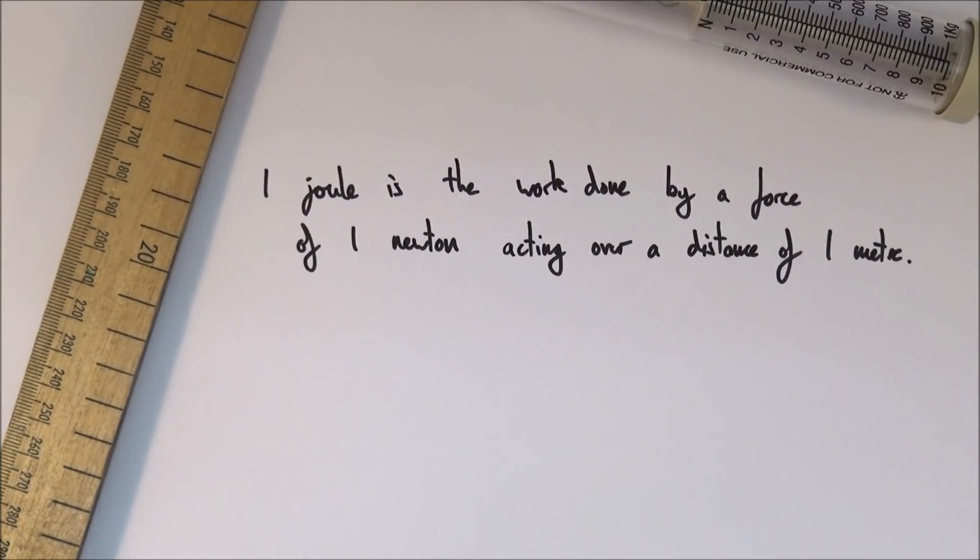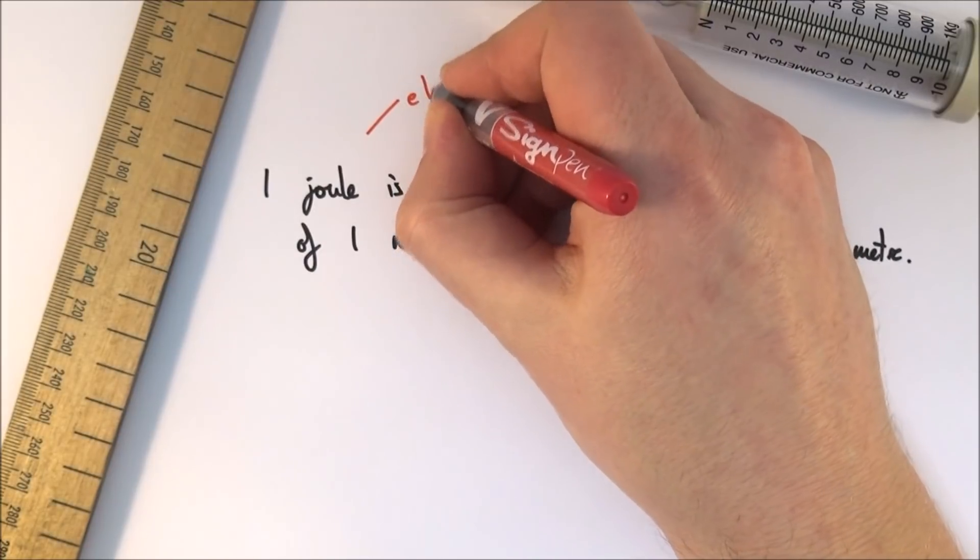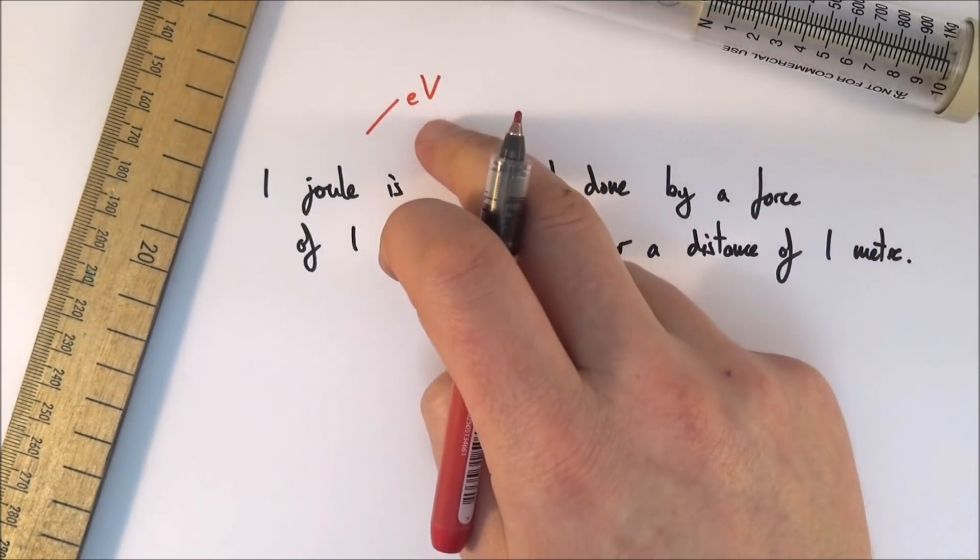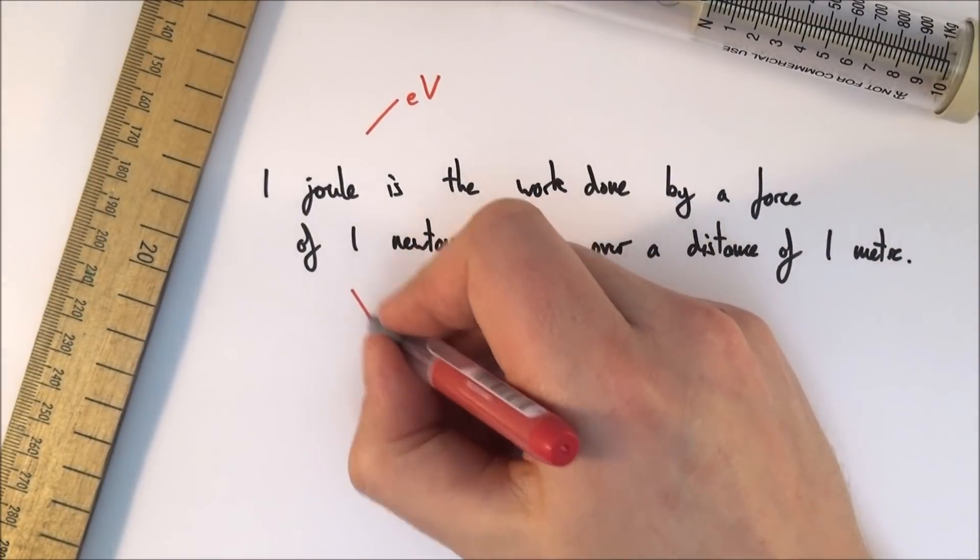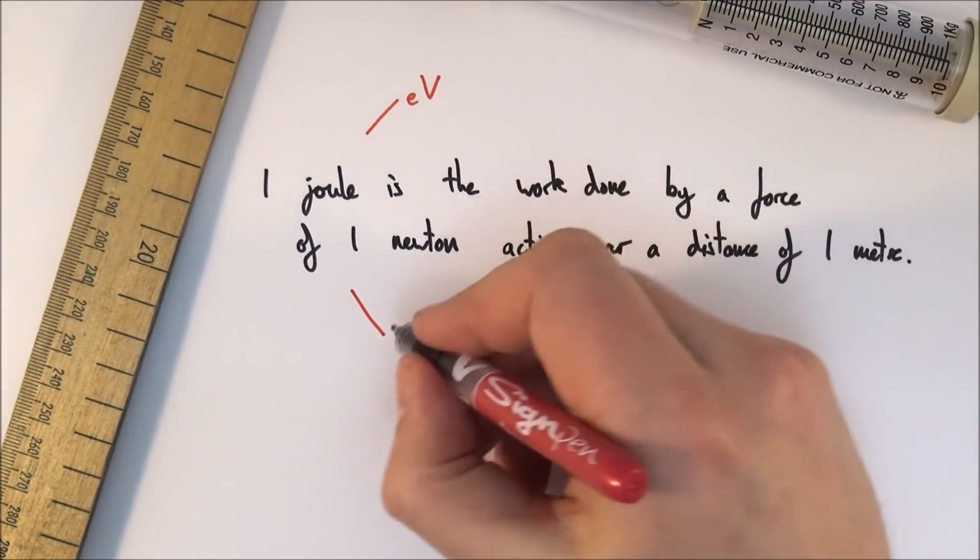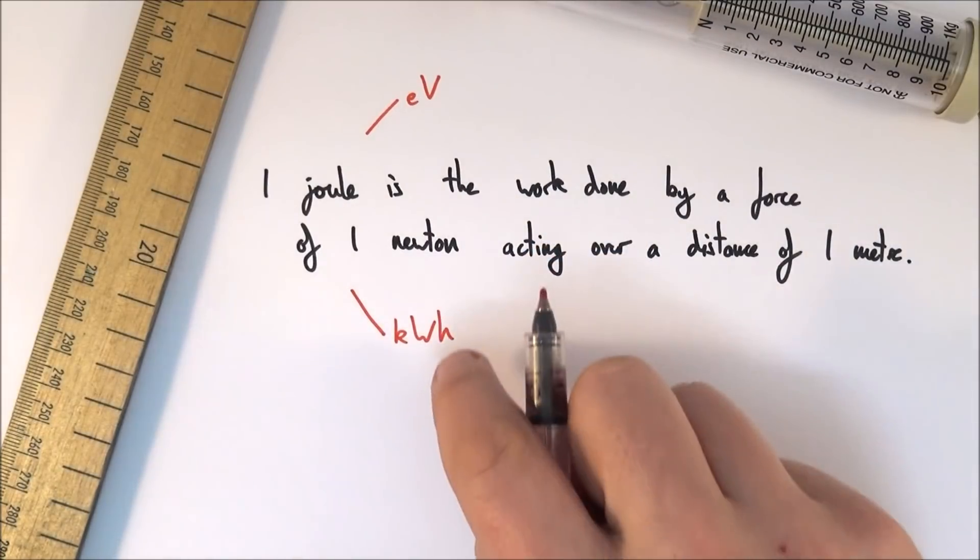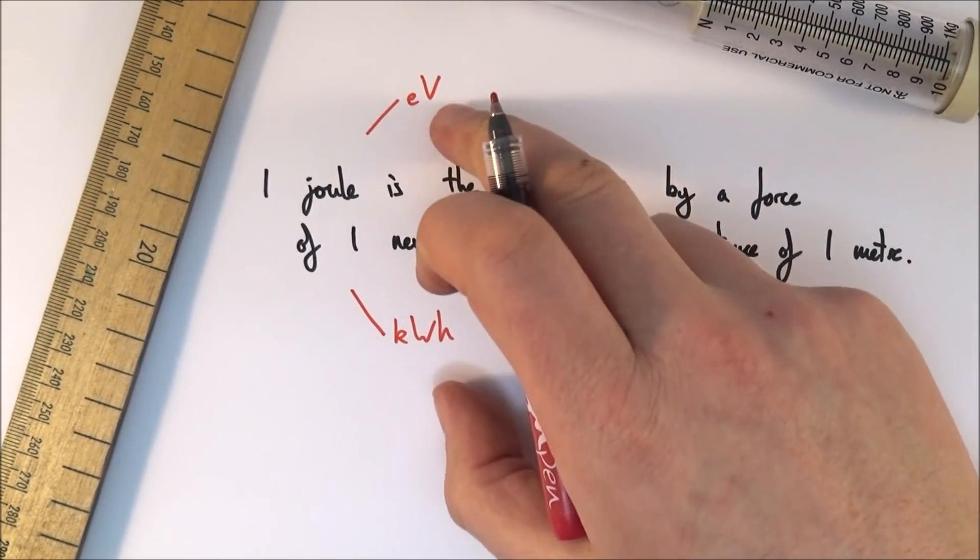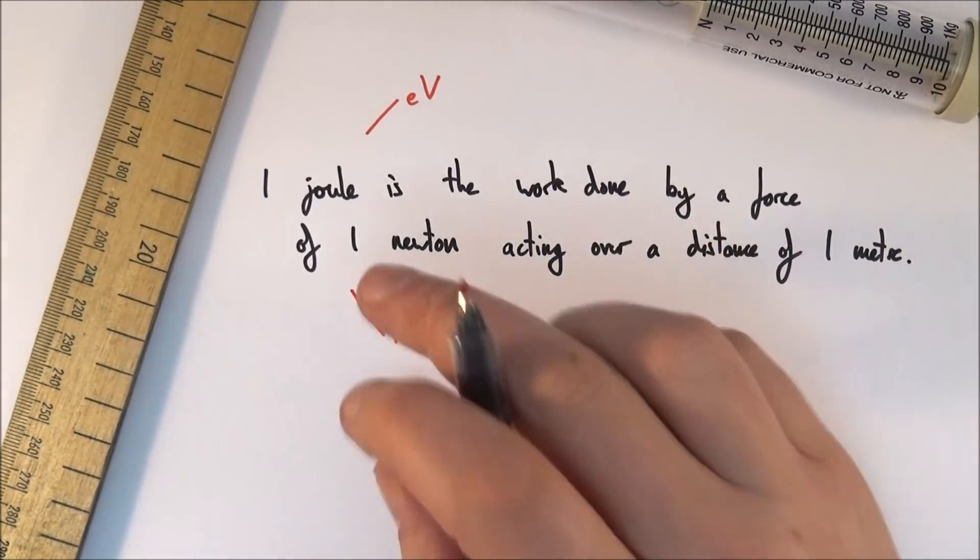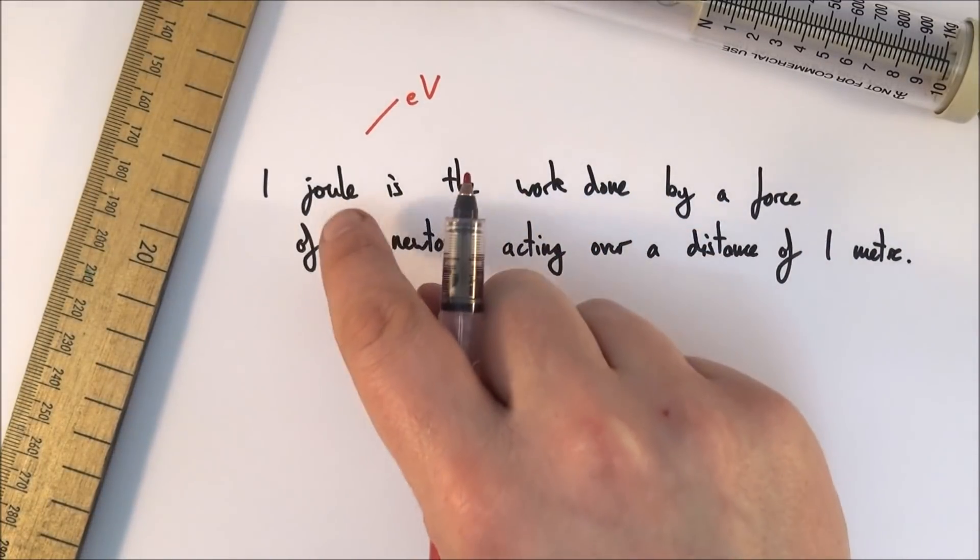There are two other ways we can measure energy. For really small things, we use electron volts, a very small unit. For really big things like household electricity, we use the kilowatt hour. But the main SI unit for energy is the joule.